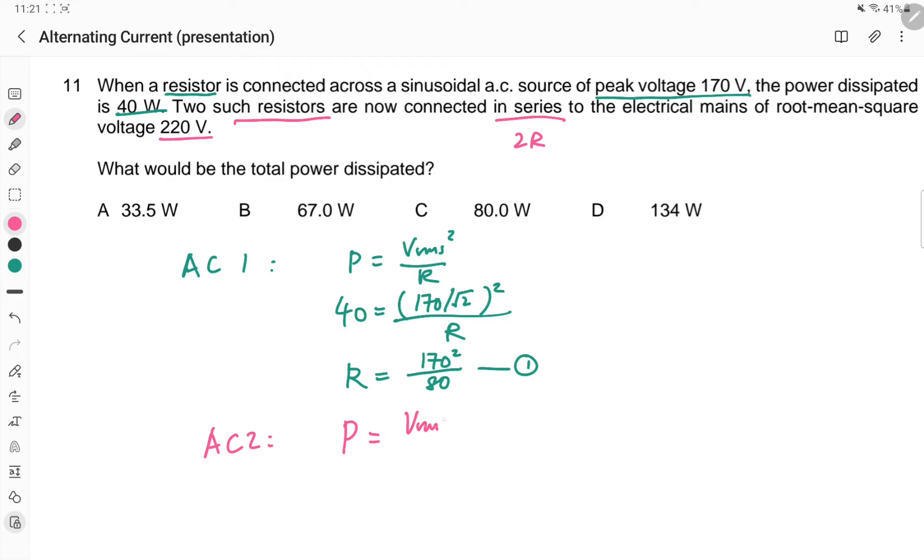V_RMS squared divided by 2R. So I have 220 squared divided by 2R. Let's work that into the equation. So I will have 220 squared divided by 170 squared times 40, because of the half.